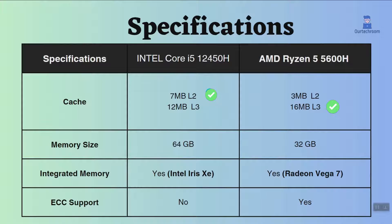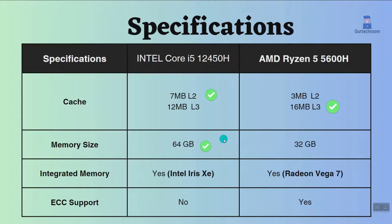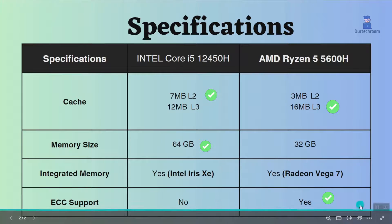The Intel Core i5-12450H can handle more memory compared to the AMD Ryzen 5 5600H. This can be helpful for users who run multiple applications at the same time if using the same frequency RAM. Also, the Ryzen 5 5600H supports ECC, so it is good for critical systems as it can detect errors and fix them.